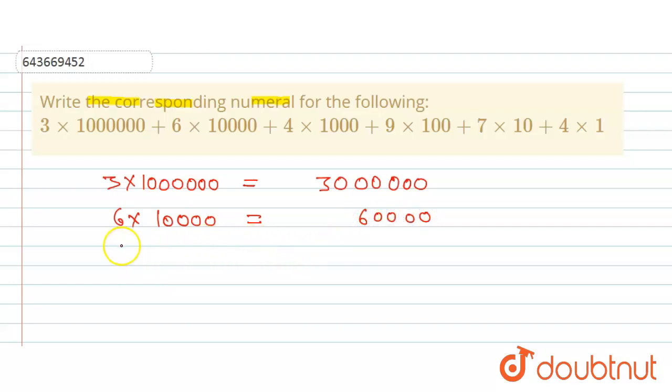And four into one thousand, this is nothing but four into one thousand, that is four thousand. Okay, so this can be written as this. And nine into hundred, that is nine hundred, so nine hundred can be written here. Seven into ten, this is seventy. Seventy can be written here.